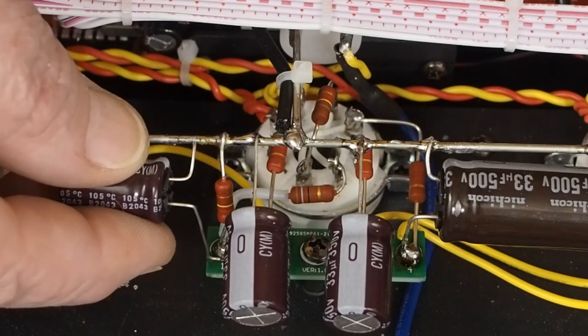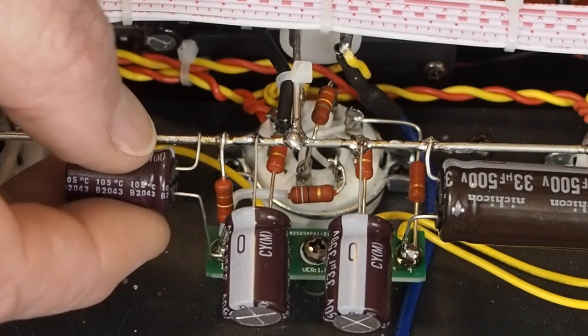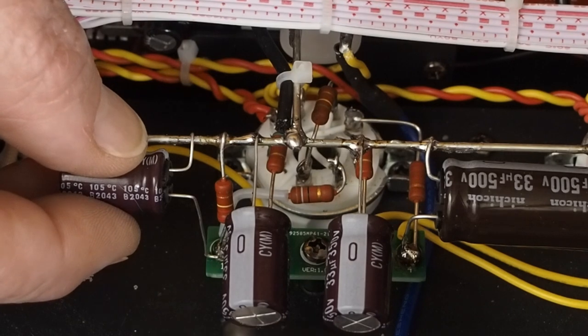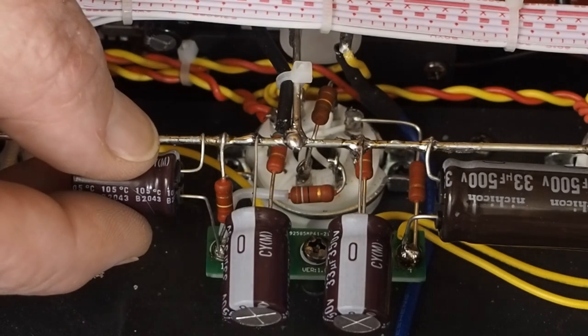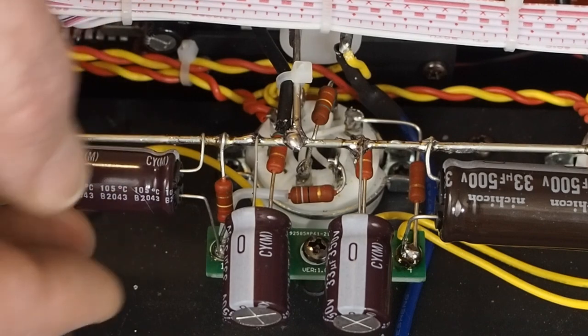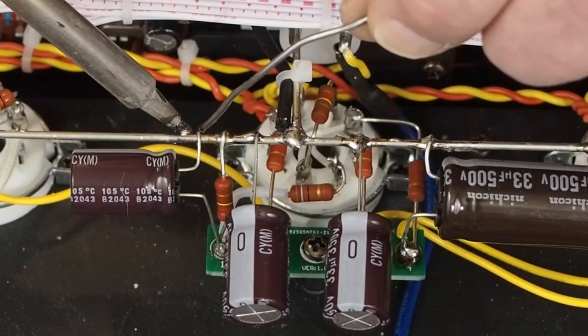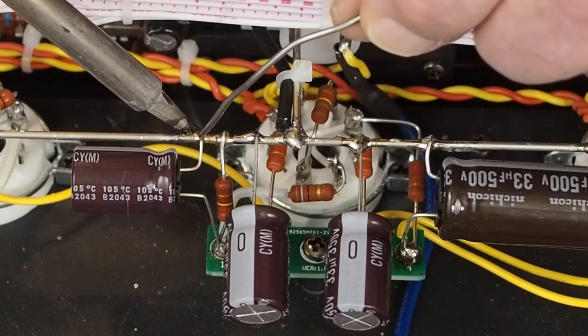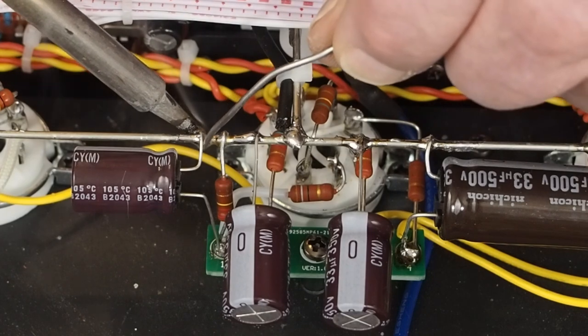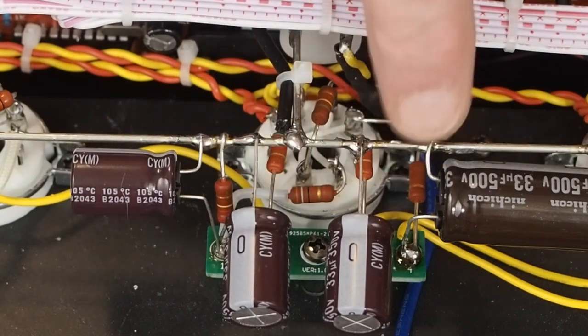So then the last one we have is this last 33UF 350 volt cap that goes across the ground side of the voltage divider. We'll come in here and solder the positive side down there at the PC board. And then we'll come up here and do the ground side up here at the ground bus wire. And then we'll be done with the resistor replacement capacitor modifications to our voltage stabilizer tube. And there we go. We're all done. Again, just make sure that you have the negative side of all these caps going to this ground bus. Because these are all positive voltage on the other side.